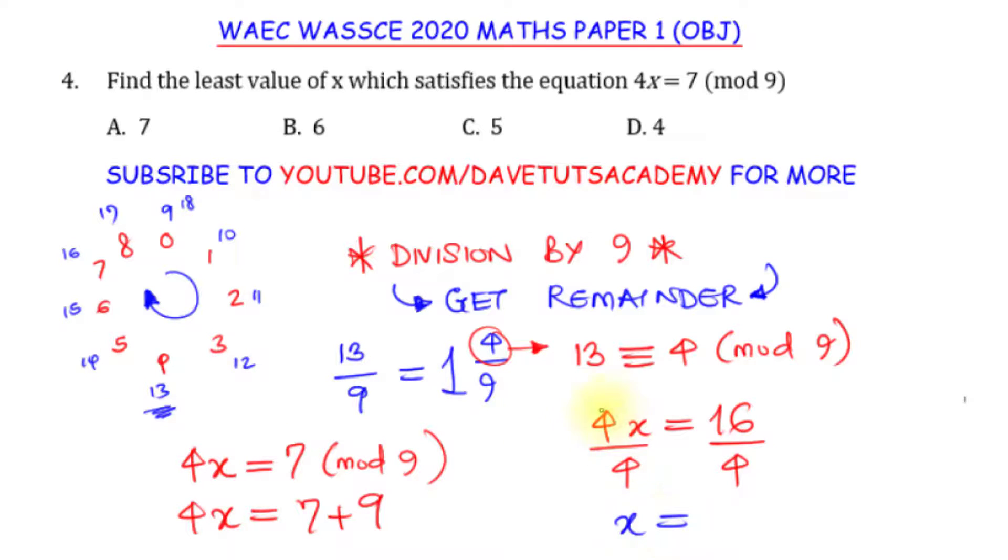This one can cancel this one, 4 over 1 and 4 over 4. So x will be 4. So looking at our options, you can see option D is carrying that 4 and that will be the correct solution to this particular question.